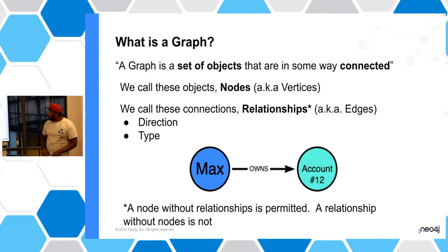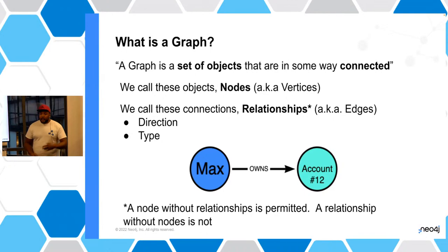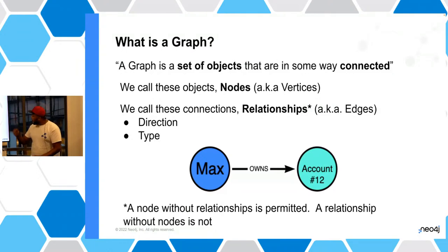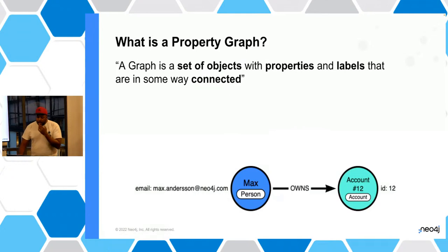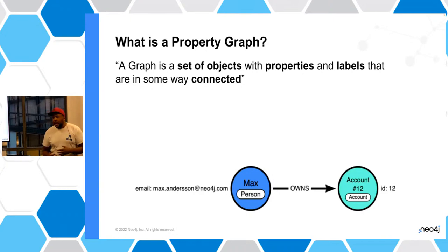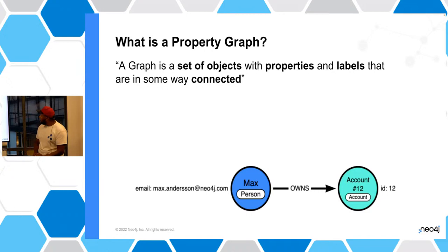These relationships usually have a direction and a type. For example, I'm Max, I have a bank account, and I own that bank account. That's simply represented as one node for me, another node for the bank account, and a relationship saying Max owns this bank account. In a graph database, we need some way to enrich our data — to tell you about our entities and nodes and what they represent. That's what we have something called a property graph for. A property graph, put very simply, is a set of objects with properties and labels.